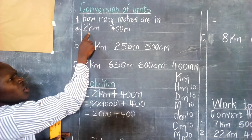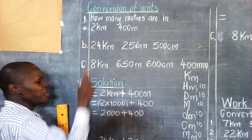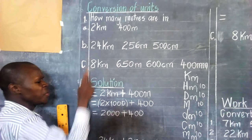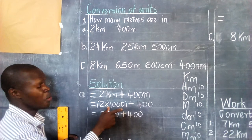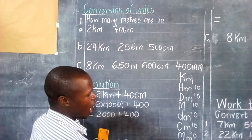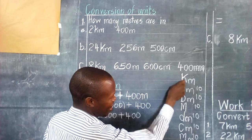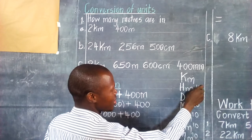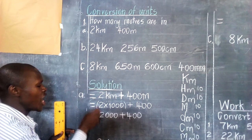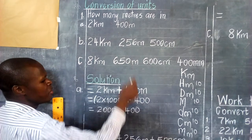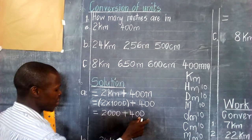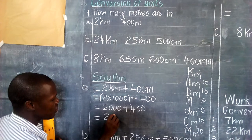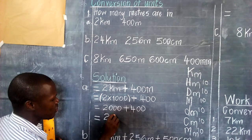Let us work out problem A. We are only going to change the two kilometres into metres. When we are changing kilometres into metres, you multiply by one thousand — sorry, by one thousand. From our formula, from metres to kilometres you count one, two, three — three zeros means one thousand. So two times one thousand, open bracket, close bracket, plus four hundred metres. Four hundred will remain the way it is. Two times one thousand is two thousand, plus four hundred. The answer will be two thousand four hundred metres.